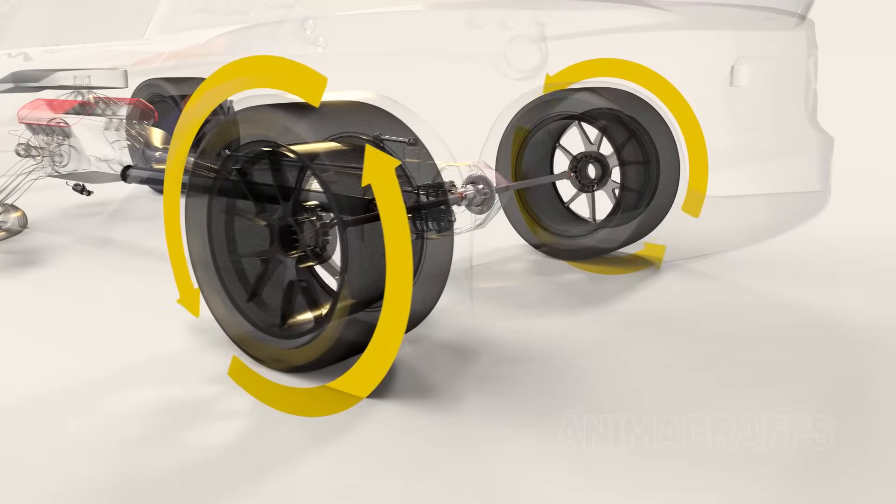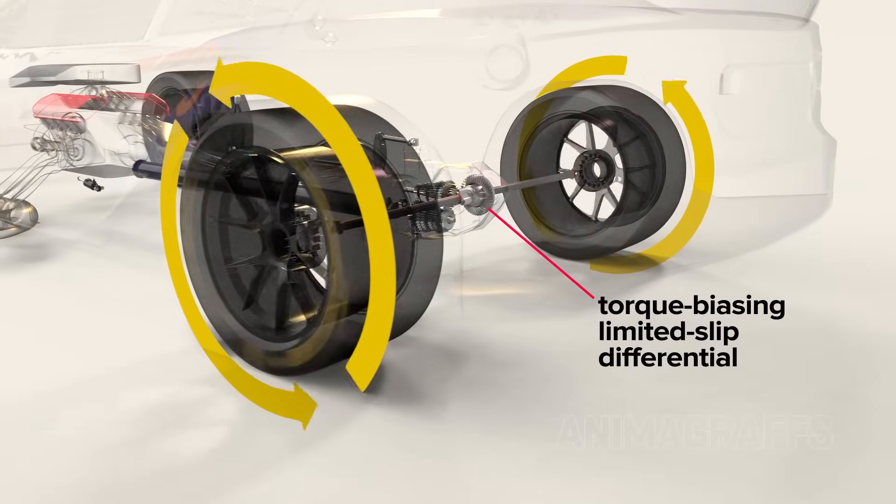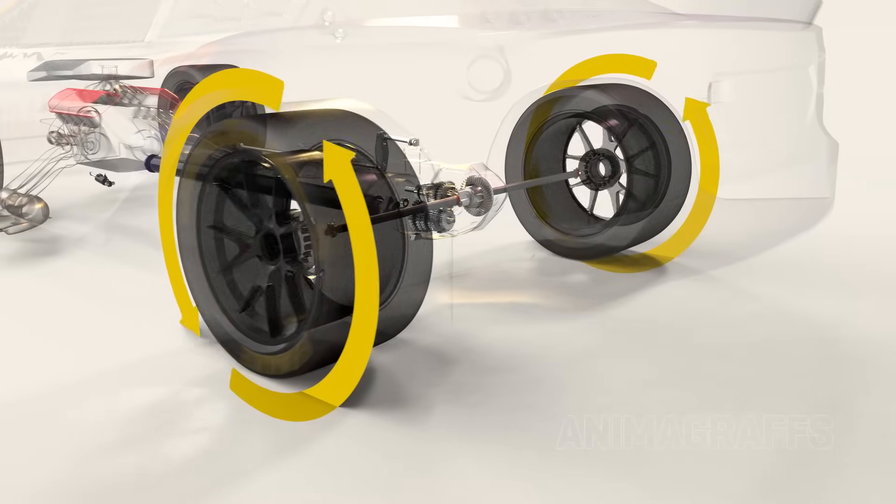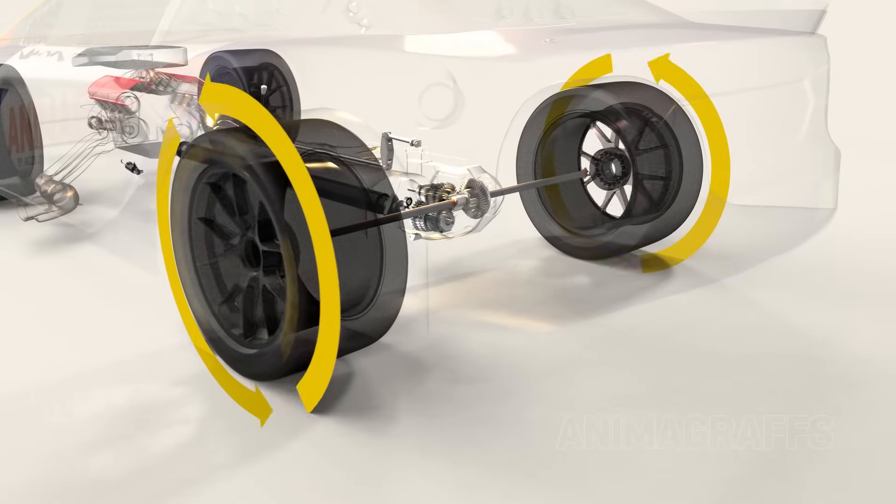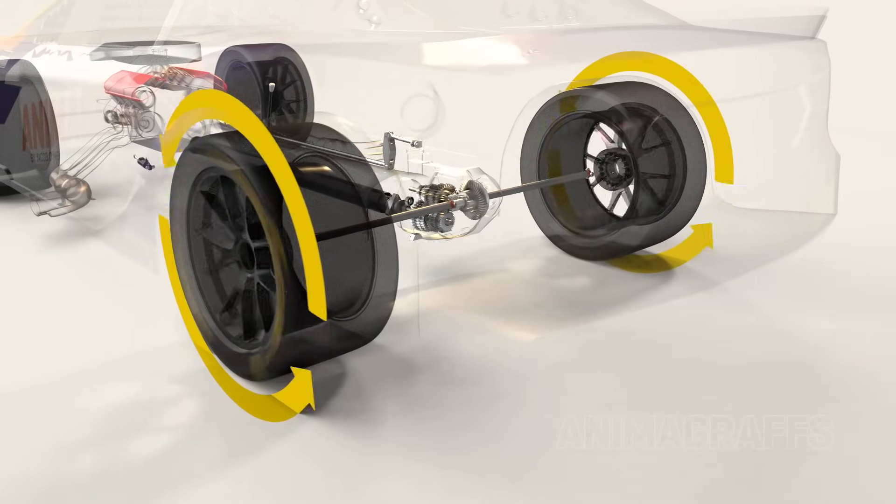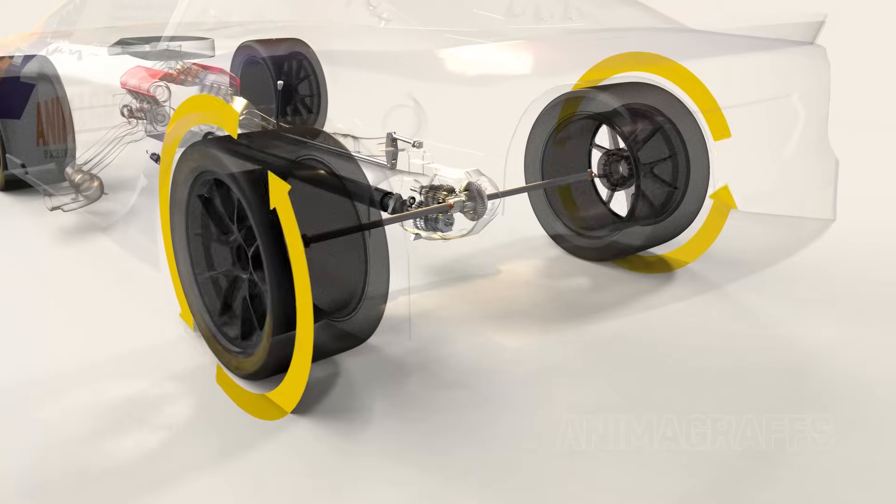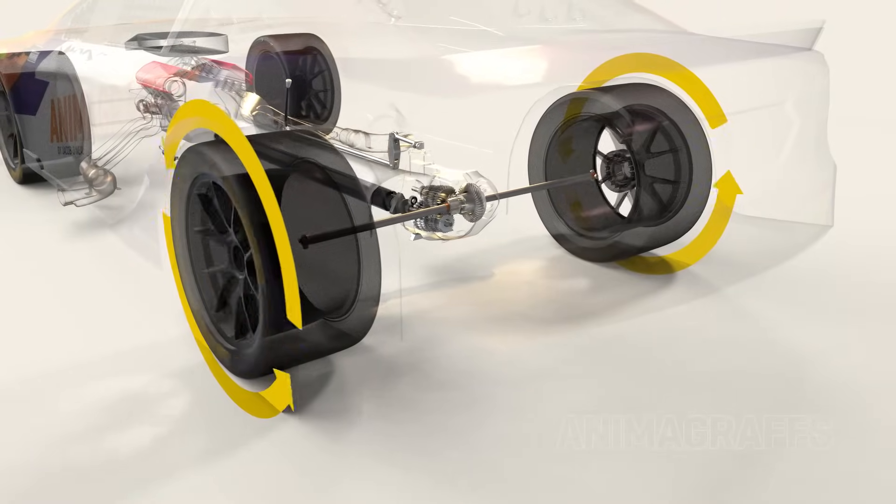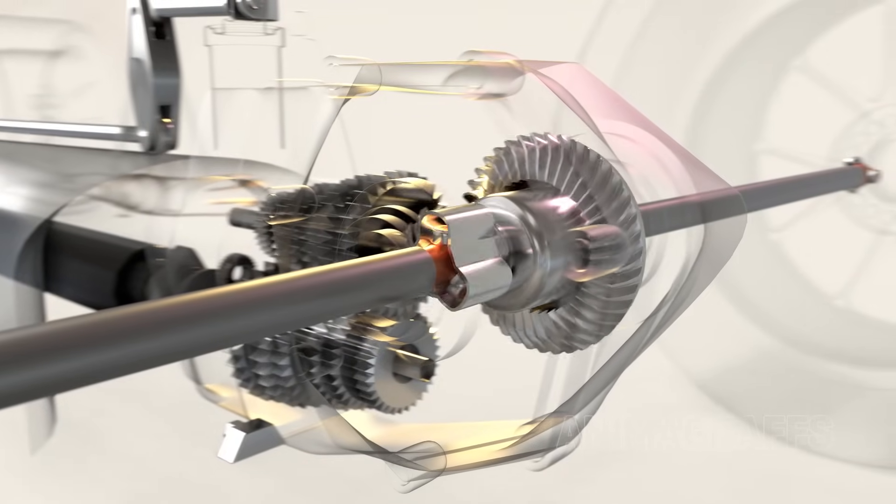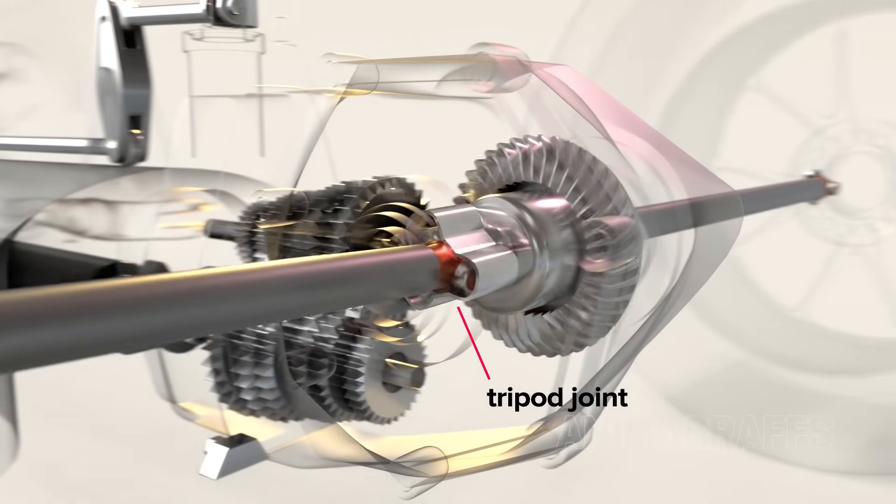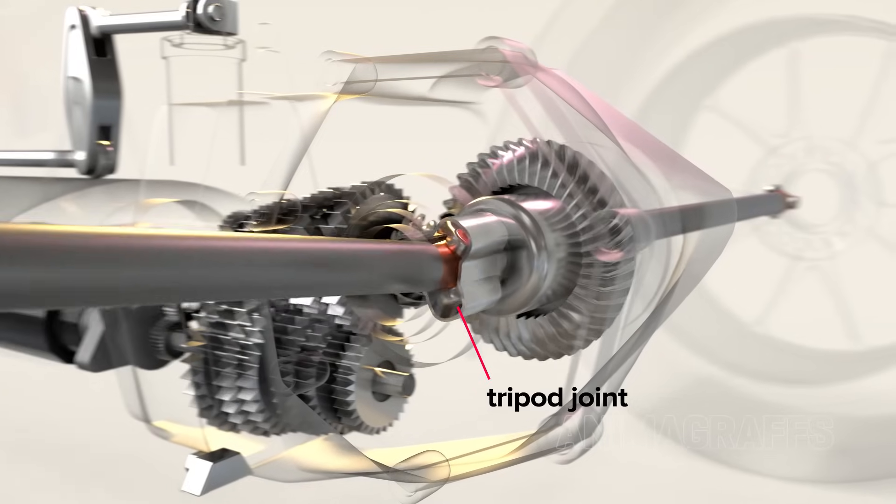The rear end has a torque-biasing limited-slip differential, meaning the tires will rotate at similar speeds when under more torque, for example on a straightaway. When rounding a turn, less torque at the rear wheels lets them rotate at different speeds. The differential gears connect to rear axles with special tripod joints that allow the spinning axles to tilt with rear suspension movement.